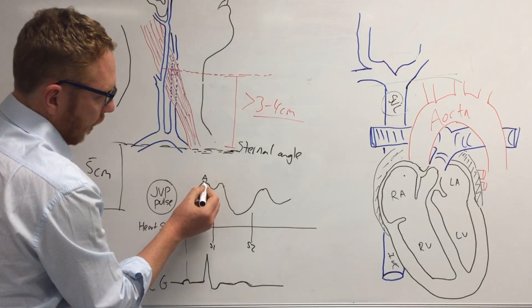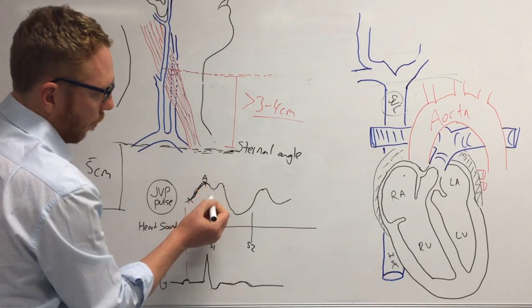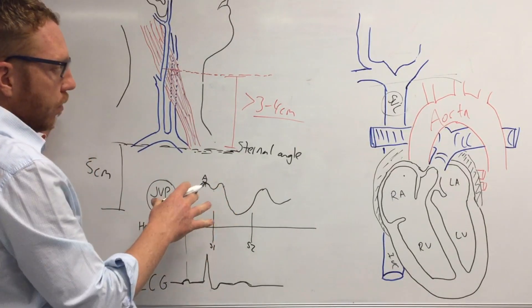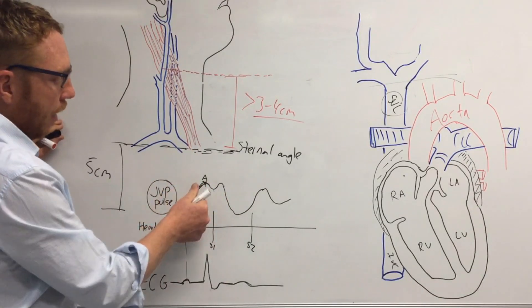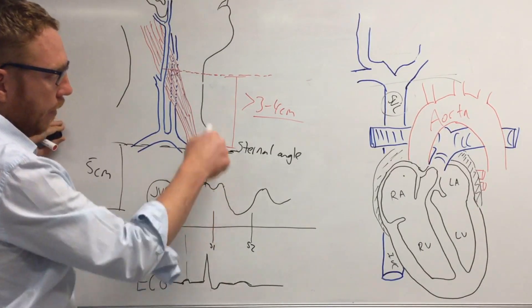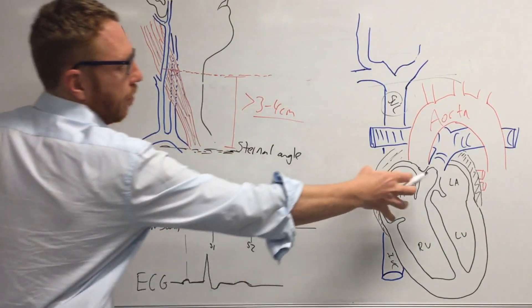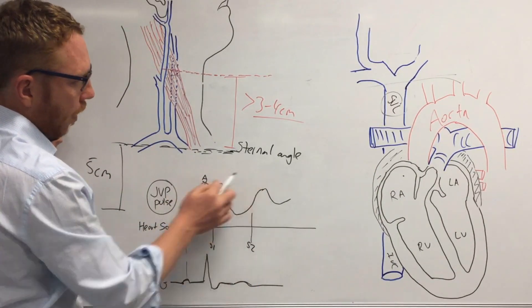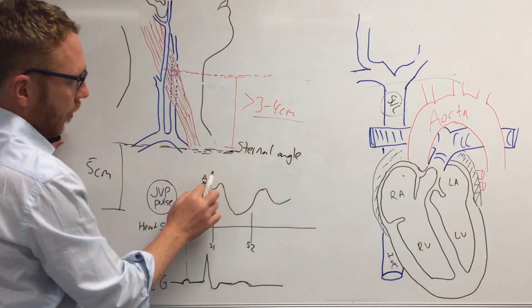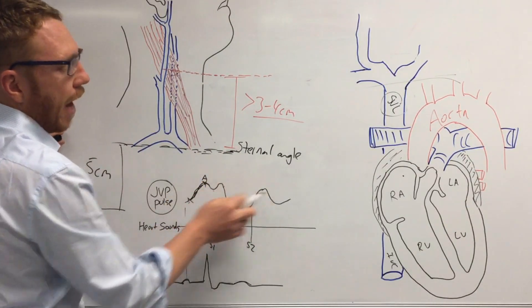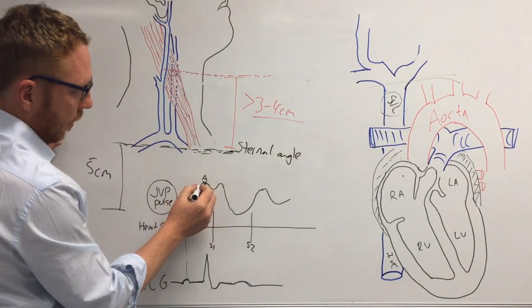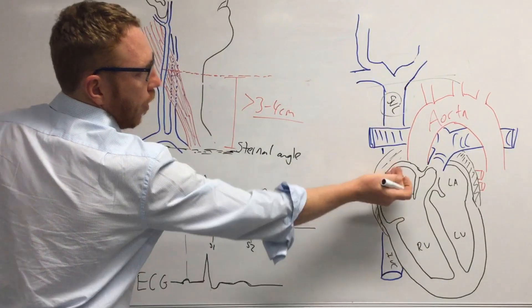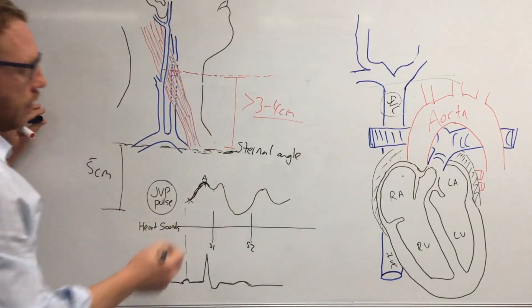So then what we see is we see a drop in the pressure. Now just as a side point, usually the times you would see normally an increase in wave pressure in the JVP pulse is the atria is filled or the valves are closed. So that's usually the two waves that have gone up, is when either the valves are closed or the atria are filled or contracting. So you can see the first A wave is actually atrial contraction, and that's the atria squeezing.